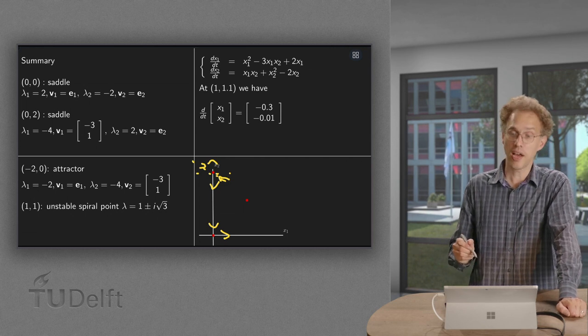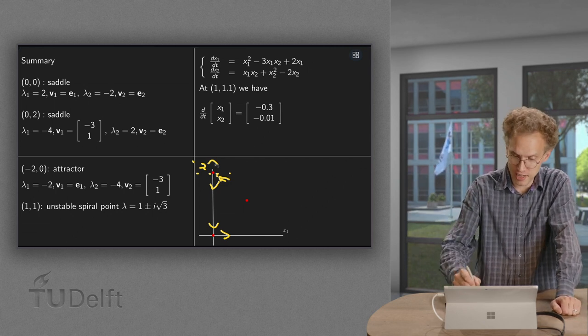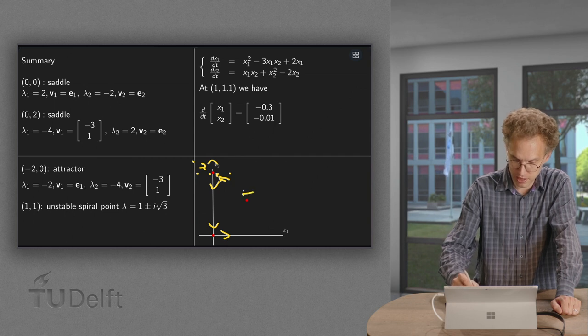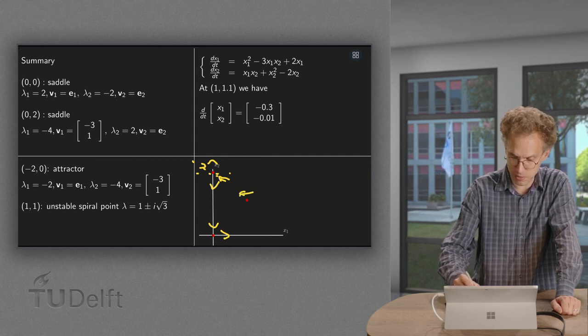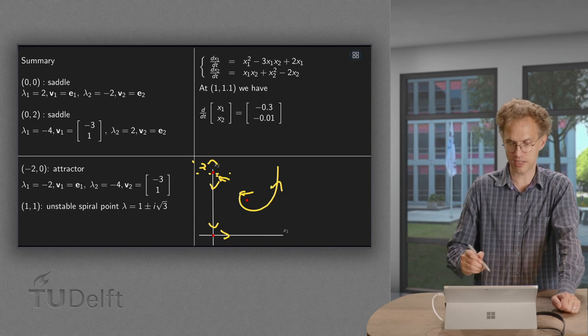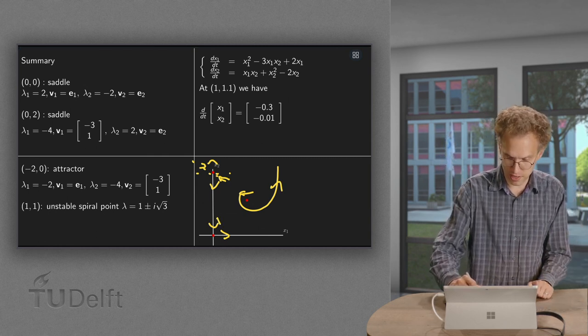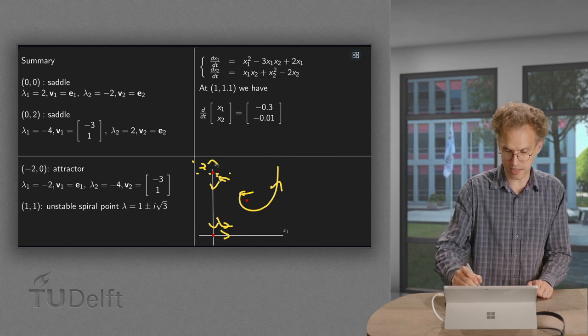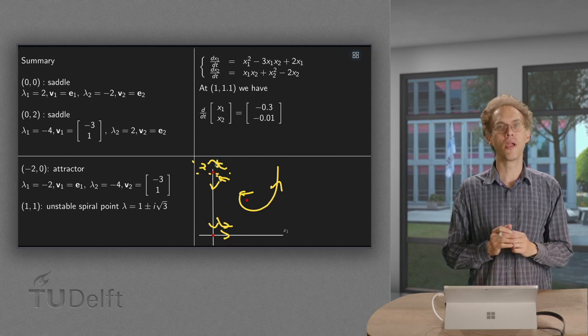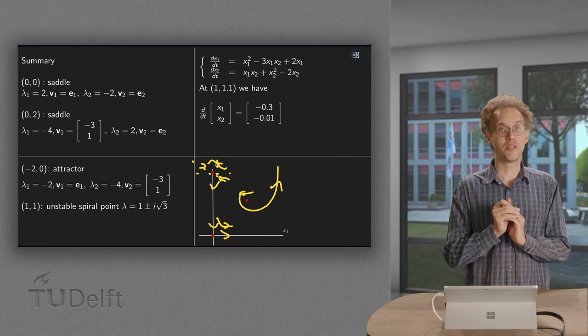There we go. And then we have a spiral point which goes to the left slightly above. So slightly above we go to the left. So the spiral point sort of looks like that. So phase space looks locally a bit like this. So there we go. So there we have our phase space.